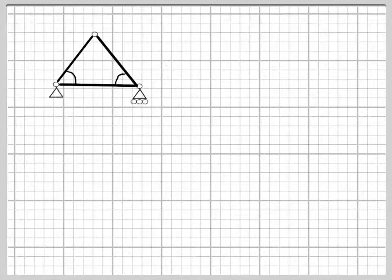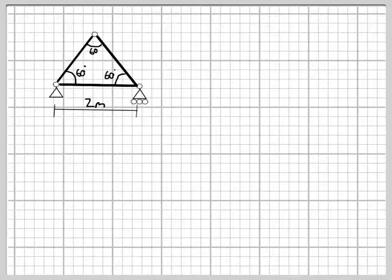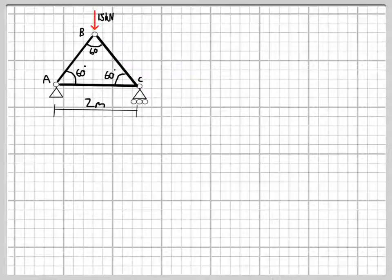This example is going to look at the analysis of a simple truss using the method of joints. The truss is, as in the diagram there, about as simple as it's possible to get with just three members and one external load of 15 kN acting vertically downwards.